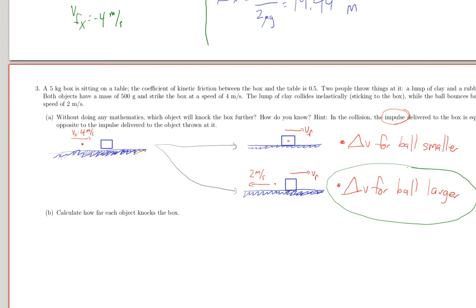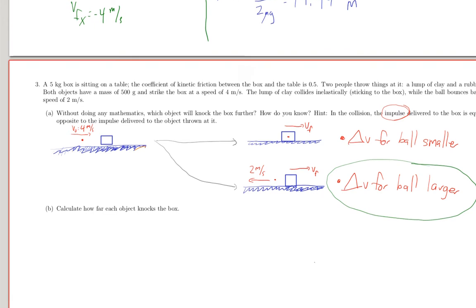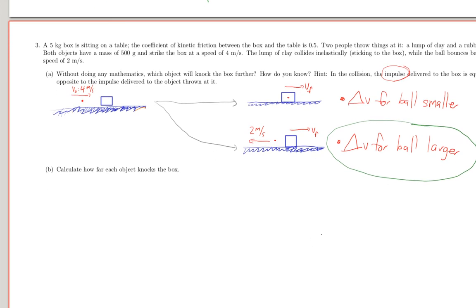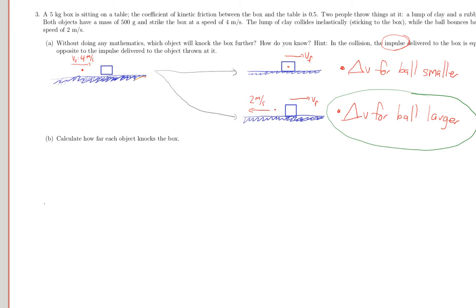Because remember, collisions don't change the total momentum. They just transfer it from one thing to the other. So here, this one knocks the box further. We can do this calculation in C. So here we're going to have to do two calculations, one of them for the one where it sticks, and one of them for the one where it bounces off.